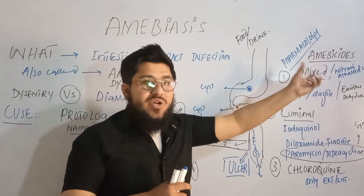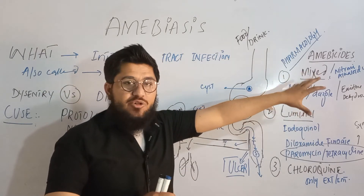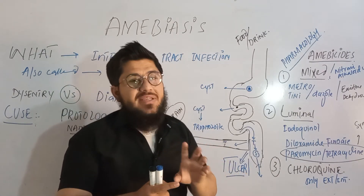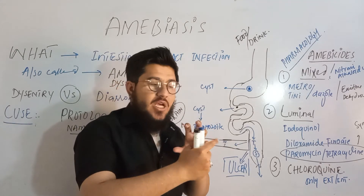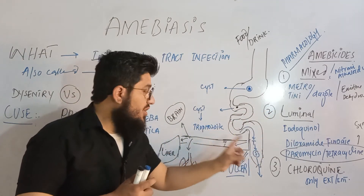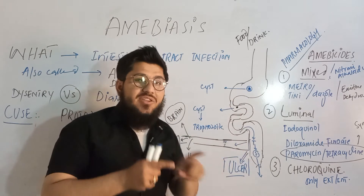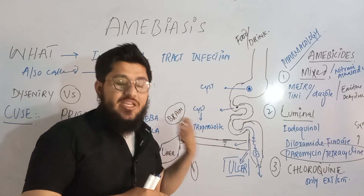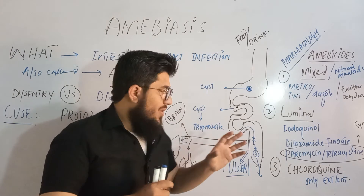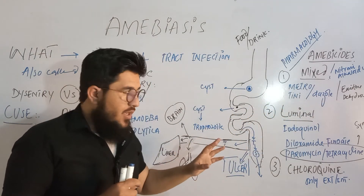Regarding the mechanism of action of nitroimidazoles like metronidazole: the nitro group is first reduced into active species. Those active species then fight against Entamoeba histolytica by targeting the DNA and proteins of the protozoan — specifically the trophozoite — whether it is present in the intestine or extra-intestinally.